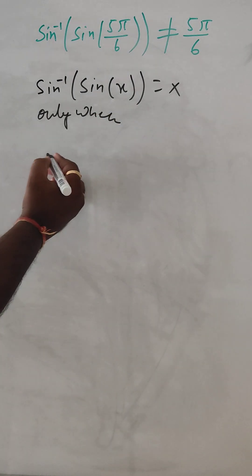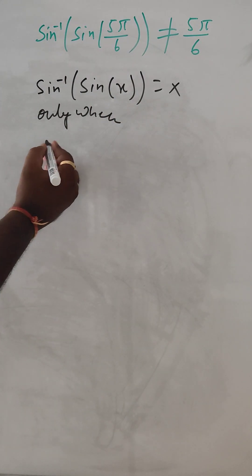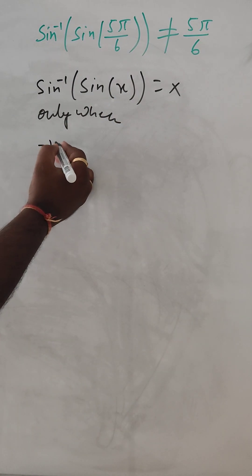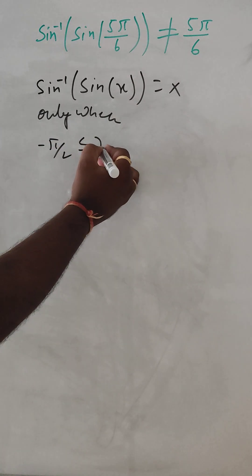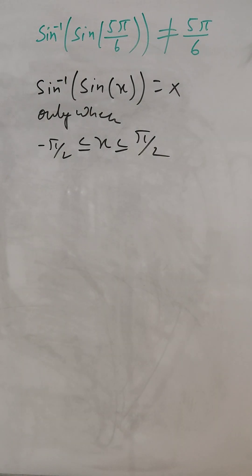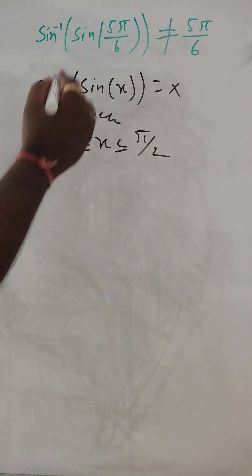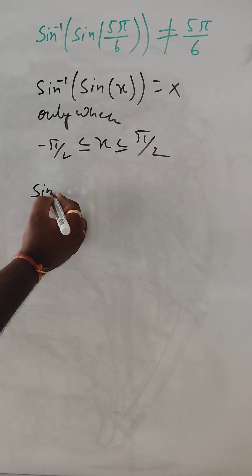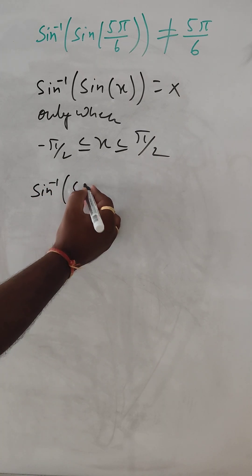x is between minus π by 2 to π by 2. Then we have sin inverse sin 5π by 6.